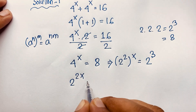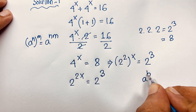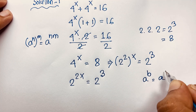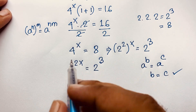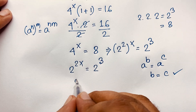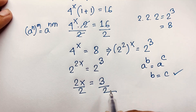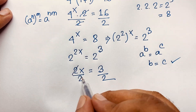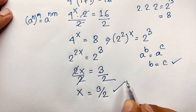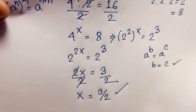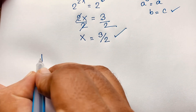So we have 2 to the power 2x is equal to 2 to the power 3. We know that if a to the power b equals a to the power c, then b equals c. Since the bases are the same, the exponents must be equal: 2x is equal to 3. Dividing both sides by 2, the 2 cancels and we find x is equal to 3 over 2. This is our final answer for Method 1.